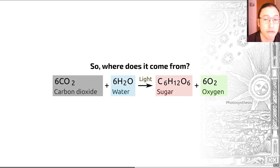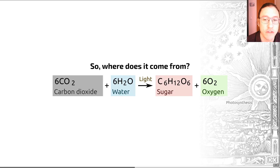Free oxygen started building up in the Earth's atmosphere at some point during the Archean. This gradual accumulation of oxygen culminated in a thing called the Great Oxygenation Event, or the GOE, which occurred around 2.5 to 2.4 billion years ago.